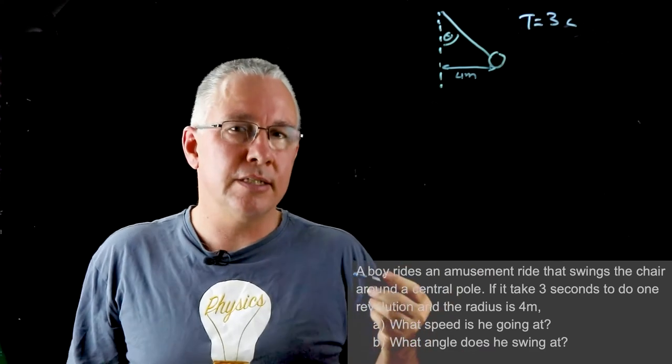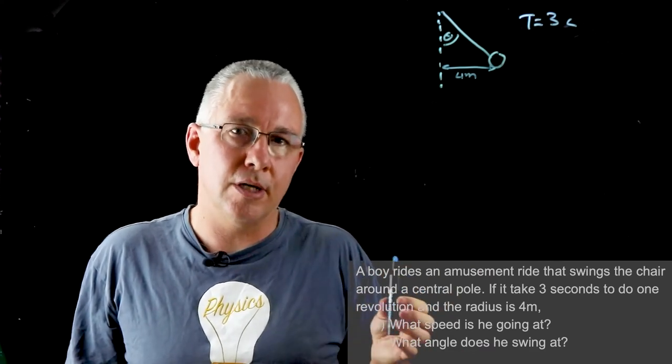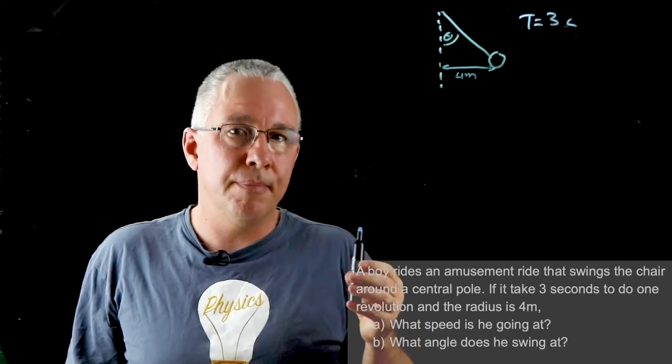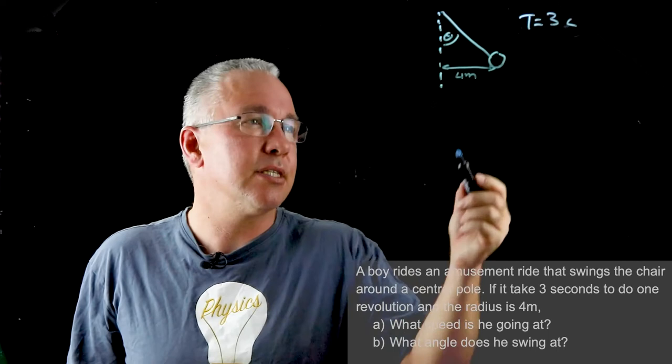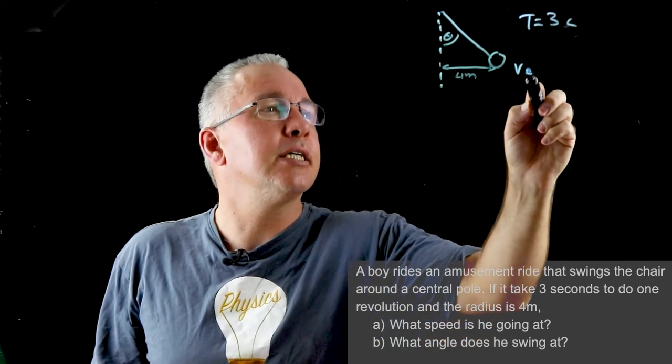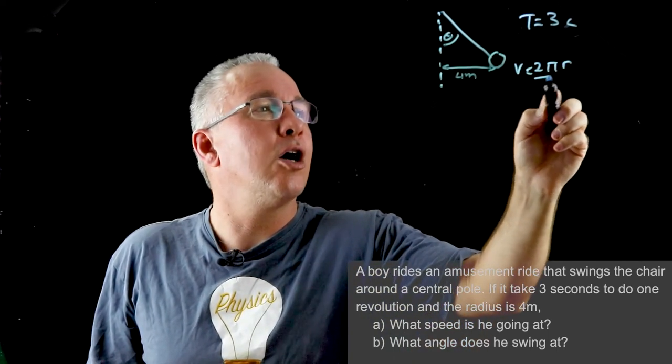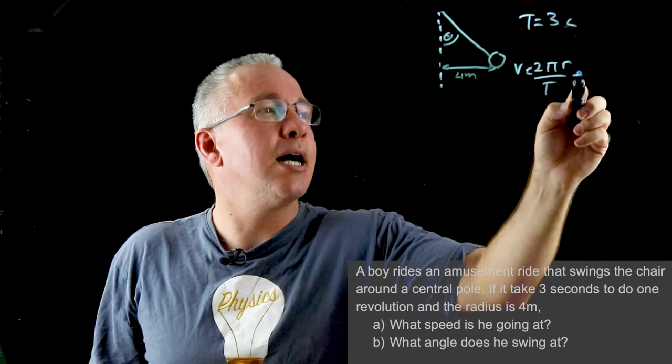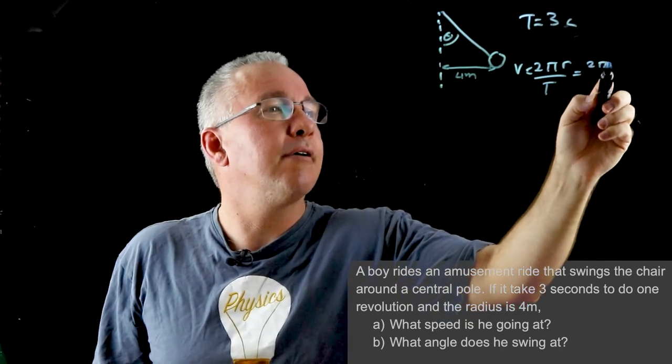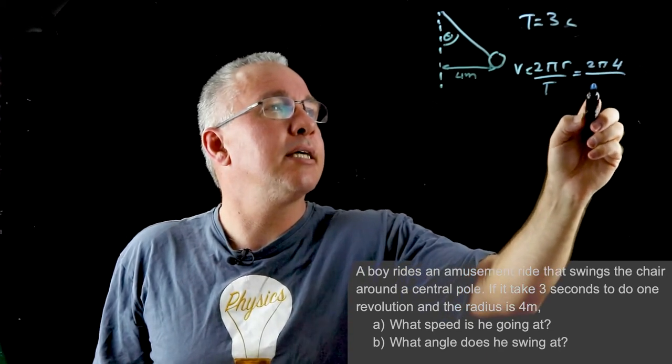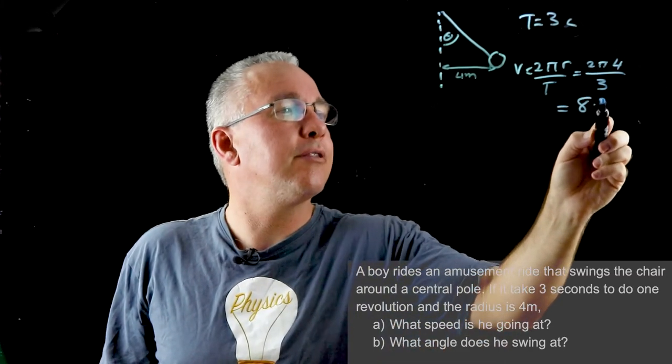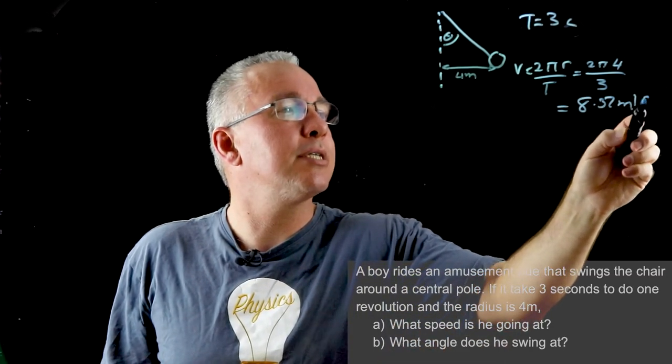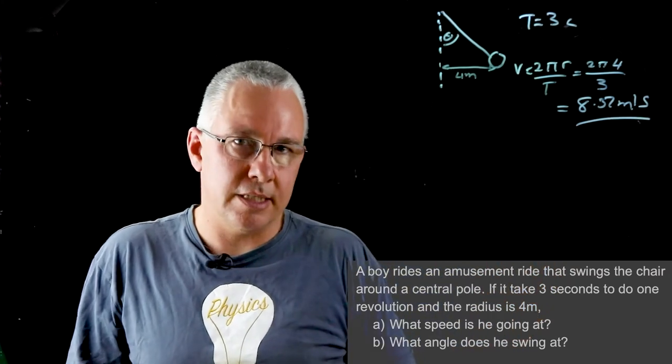Well how fast he's going is relatively straightforward because all we need to know is the circumference and the period that takes, which is basically distance over time, and that will give us the velocity. So the velocity is equal to 2πr over t. Now of course r is equal to our value of 4, our t is equal to 3, and you're going to get a value of 8.37 meters per second. So that is his velocity.